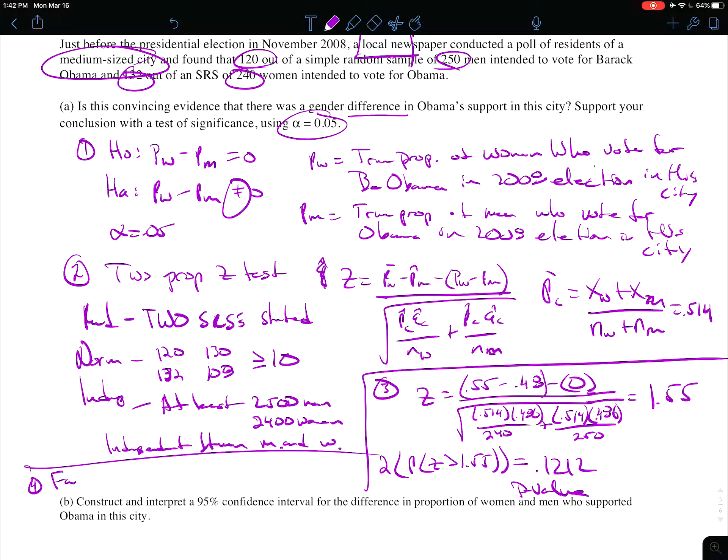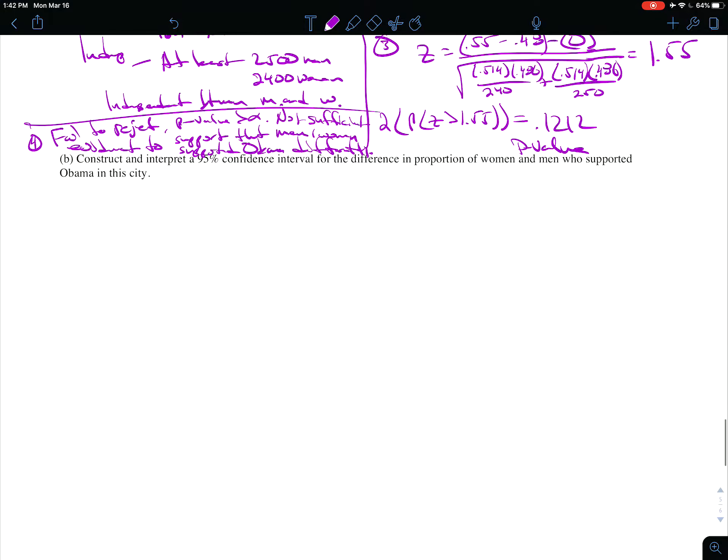So based on that p-value, which is greater than alpha, we fail to reject. The p-value is greater than alpha, not sufficient evidence to conclude the alternative, which was that there was a difference in proportions to support that women supported Obama differently. That's as much as we can say about that.